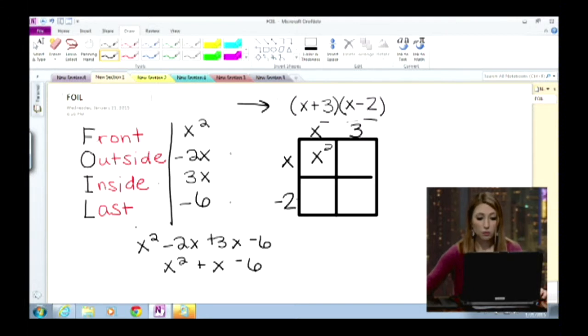So x times x, x squared, 3 times x, 3x, negative 2 times x, negative 2x, and then lastly, 3 times negative 2, negative 6.